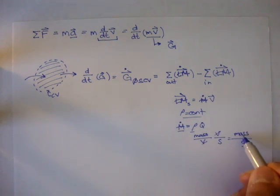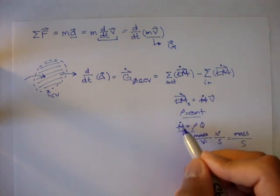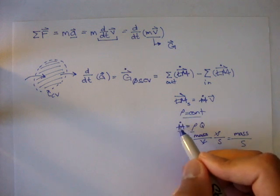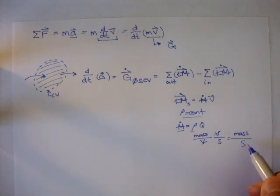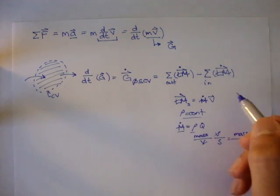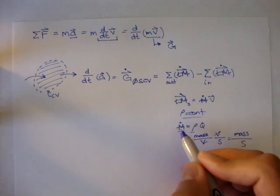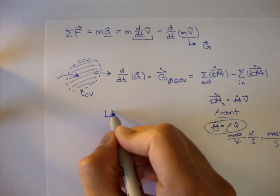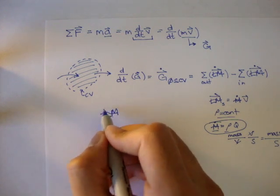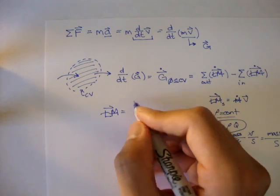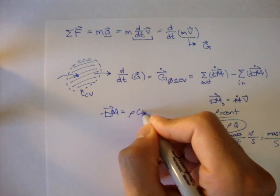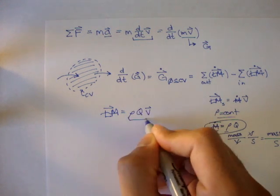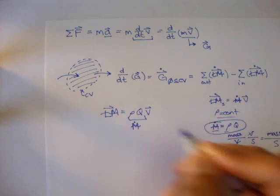And that's our mass per time, mass rate. And our linear momentum is, so if all of this was true, we can say the linear momentum flow is going to be equal to rho times q times v, where this is the mass rate.